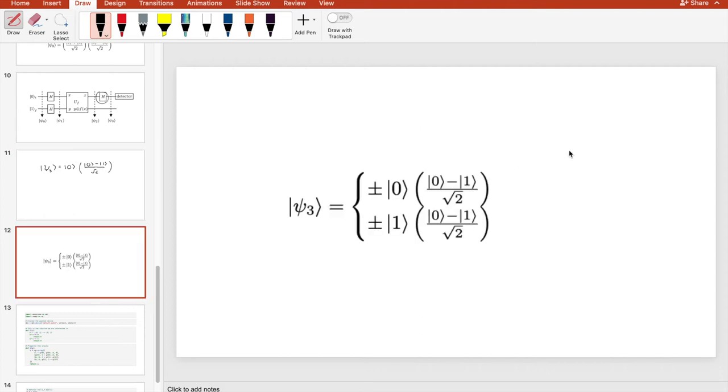For all other cases, this is what we end up with, where this top possibility is when f of 0 does equal f of 1, so for the constant functions, and this bottom possibility when f of 0 does not equal f of 1, again for the balanced ones. So we can conclude that where f of 0 does equal f of 1, the algorithm doesn't change the state of the first qubit. Whereas when f of 0 does not equal f of 1, the first qubit is flipped to be the value of 1.